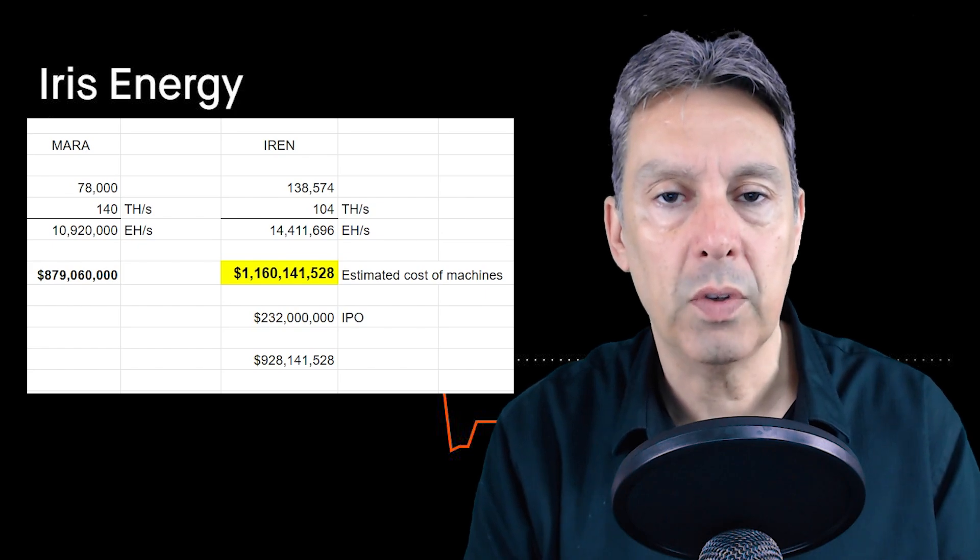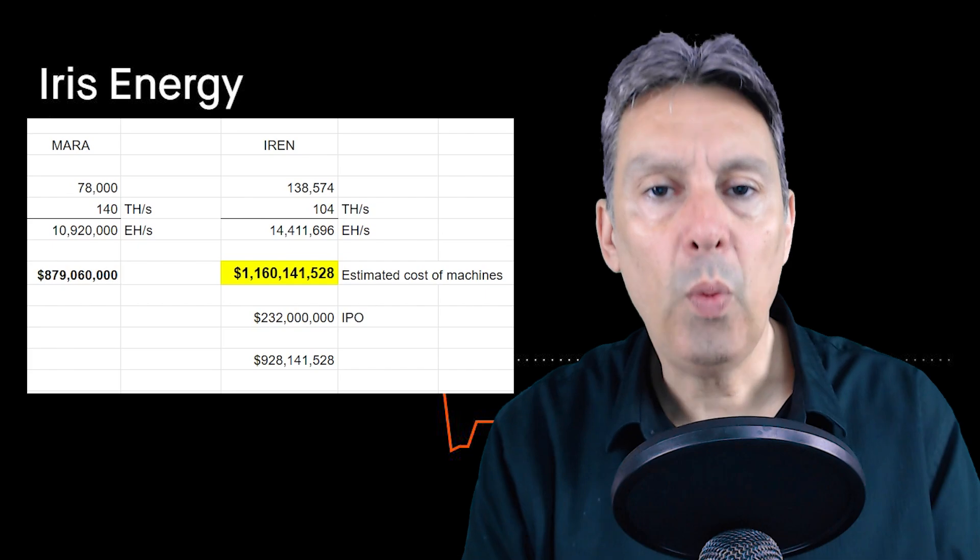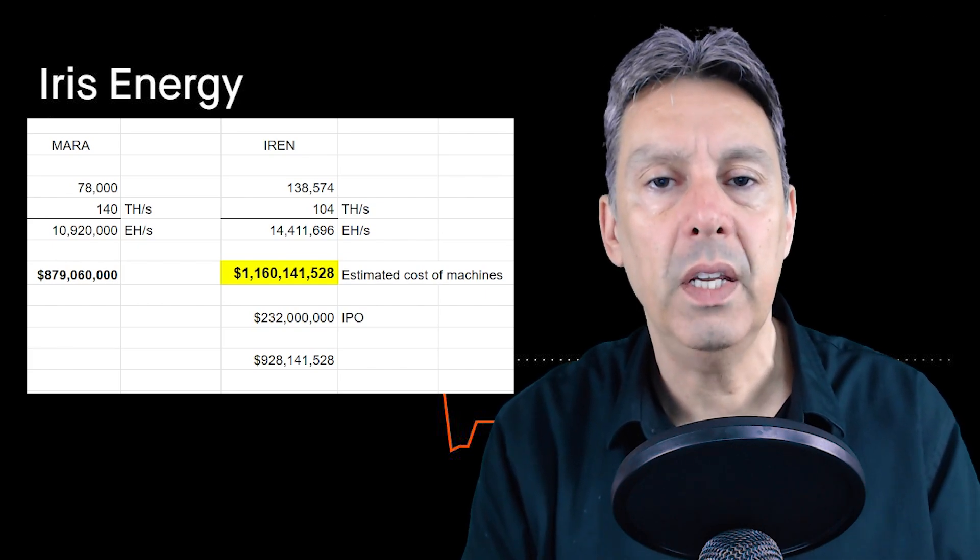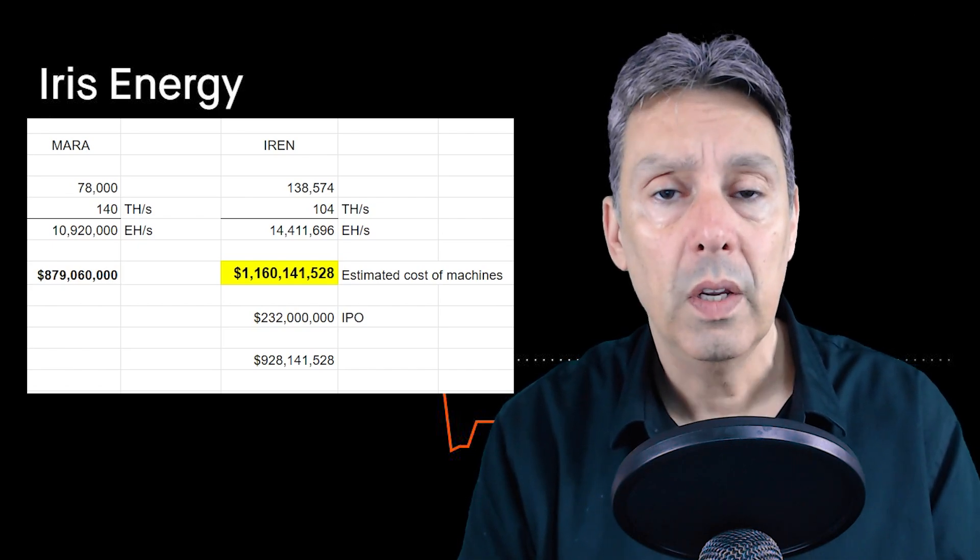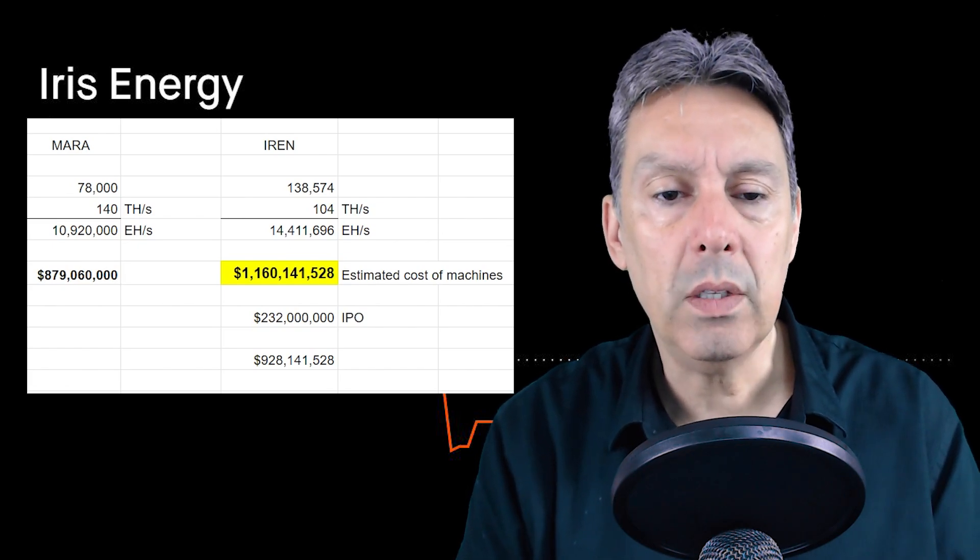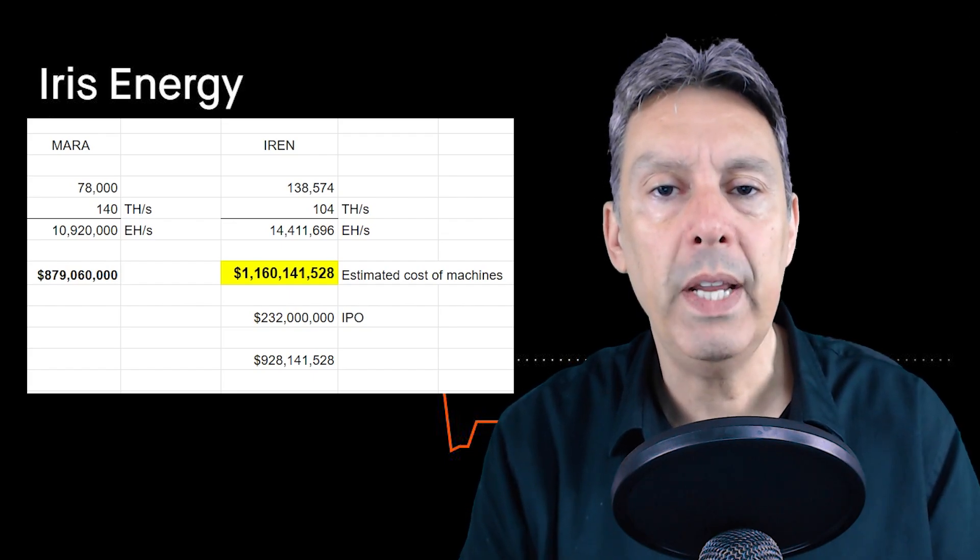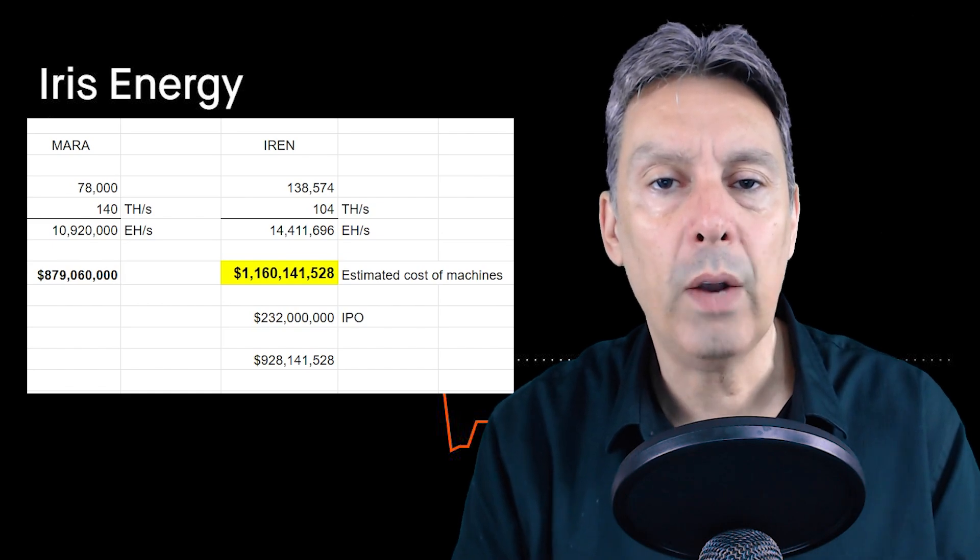They do not need to execute this plan to perfection. None of the bitcoin miners have stayed 100% on track with their growth plans. But what they do need to do is continue to increase their exahash so they can increase the amount of bitcoin that they mine, so that they can increase the market cap of their company, so that they can raise this billion dollars that they need at some type of reasonable rate.